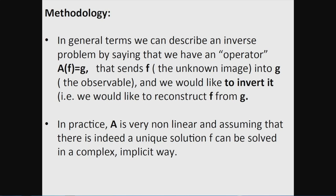Mathematically, in a very general context, what we have is an operator A that sends the unknown image into the observable. Inside the domain, there is an unknown thing F, and what we can collect is G. What we want to solve is the inverse problem: given G, reconstruct F. This sounds very nice, but in practice A is a very nonlinear operator. And supposing there is a unique solution — which many times there is not — solving it is possible only in a very complex, implicit way.